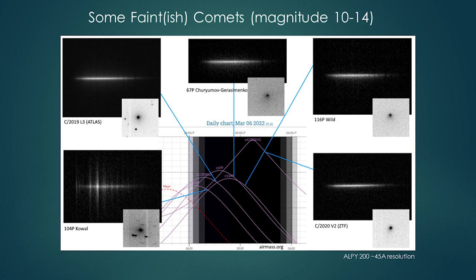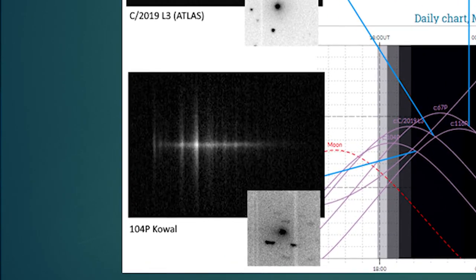We can go reasonably faint — magnitude 10 to 14 — with the Alpy at its lowest resolution. These five spectra were all taken on the same night. I just waited for each comet to go past the meridian in turn and took an hour on each. But most of them are boring — four out of five just show a continuous spectrum of dust surrounding the coma with a few absorption lines from the solar spectrum. But the one on the bottom left, 104P, shows the continuous spectrum of the dust near the centre of the coma, plus the emission bands radiating out from that central coma. The slit length is around six arc minutes, so you can see that the gas producing the green glow — the CN and NH2 — extends well beyond the region where the dust is.